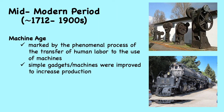The Machine Age is an era that includes the late 19th century until the early 20th century. It forms a late part of the Second Industrial Revolution. The mid-modern period is marked by the phenomenal process in the transfer of human labor to the use of machines. And later in this period, simple gadgets and machines were then replaced by improved ones that significantly increased production. Shown in this slide are metalworking machineries and locomotives which were built during the Machine Age.